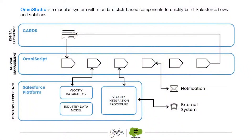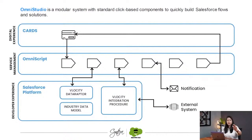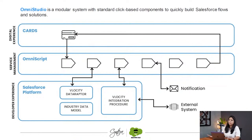Again, with this block diagram — it has got Flex Cards for the good UIs, and Omni Script for the guided and entire process flow. Along with Omni Script there are a couple of things used from a developer point of view, like Integration Procedures. Let's say you want to make some API integration from a third-party application — you use Integration Procedure to connect with your external system.